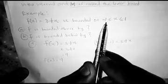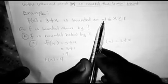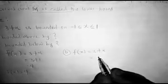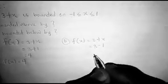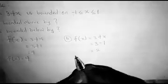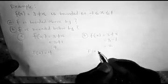Similarly, f(x) is bounded below: 3 plus x. Don't forget this is your lower bound, so anywhere you see x, you put minus 1, and that will be 3 minus 1, which gives us 2. That means f(x) is bounded below by 2 and bounded above by 4.